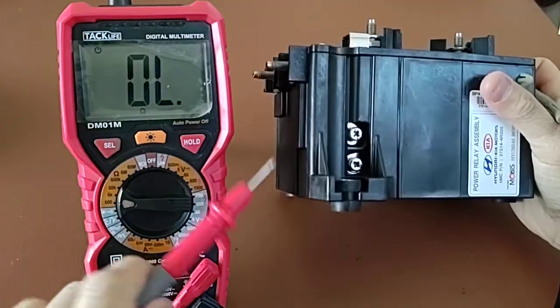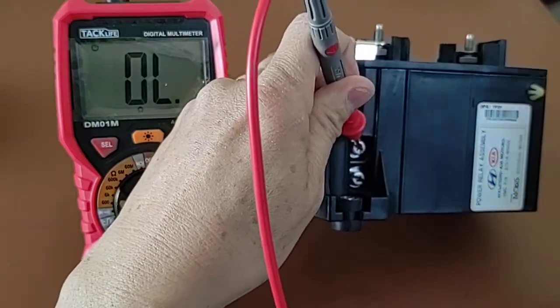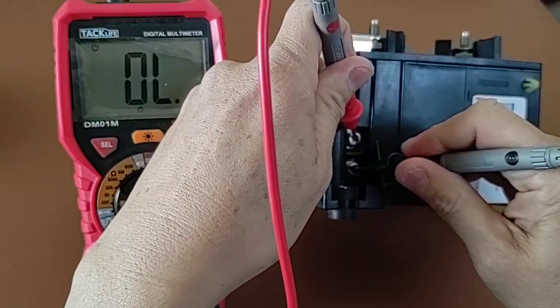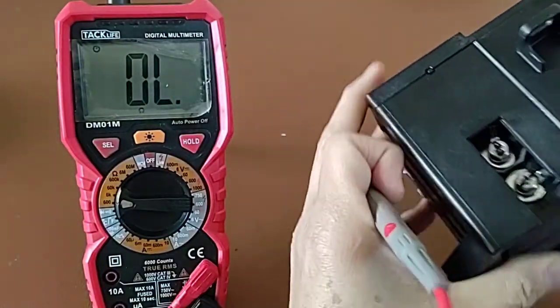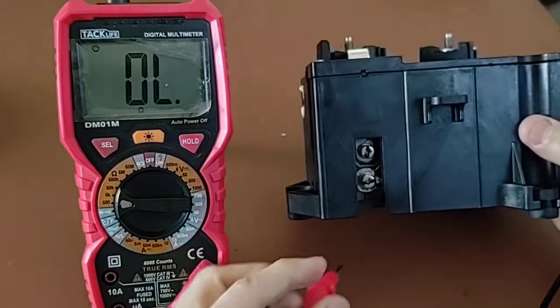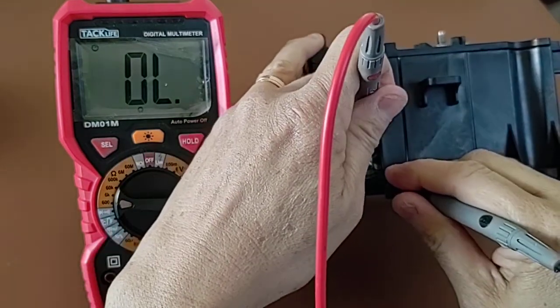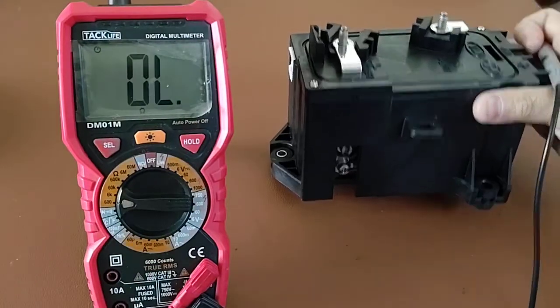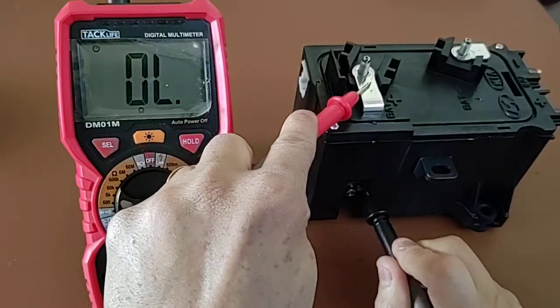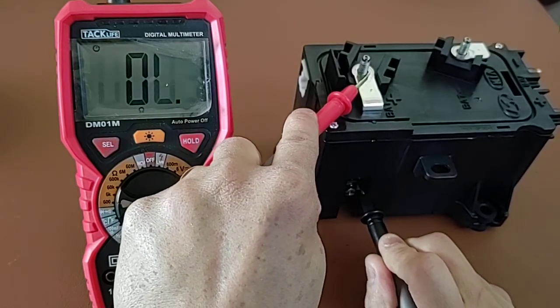This is the relay contact. You can see it's not shorted. Likewise, you can check the other relay on the other side like so. Again, it is working. The terminals to the relays are fine as you can see.